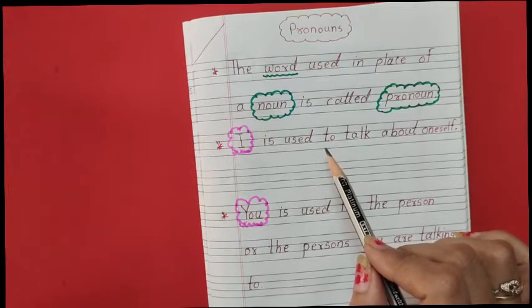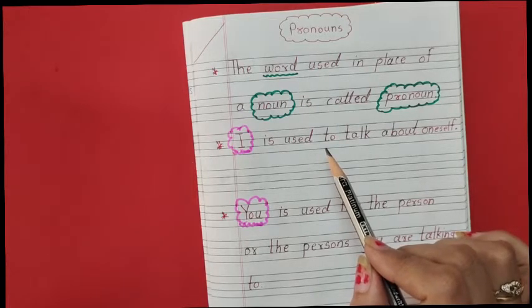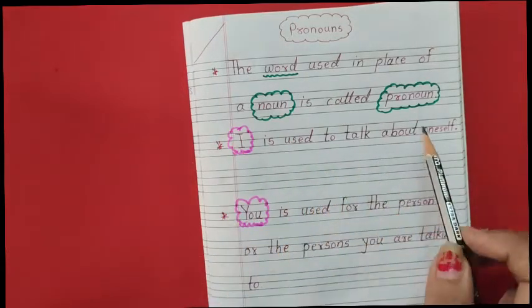Here I didn't say Teju want book or Teju want to go to school. I used I. This means I am talking about myself. So I is used to talk about oneself.